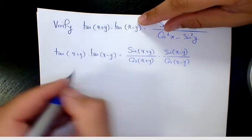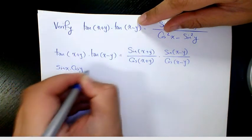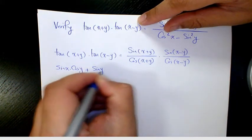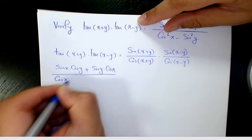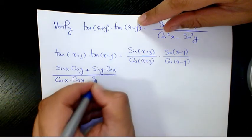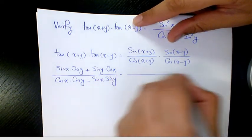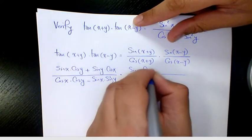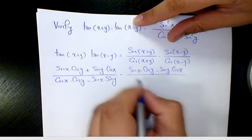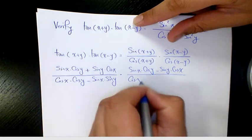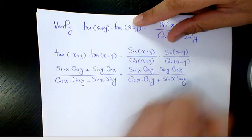Then you expand it. You have sine(x)cosine(y) plus sine(y)cosine(x) over cosine(x)cosine(y) minus sine(x)sine(y), times sine(x)cosine(y) minus sine(y)cosine(x) over cosine(x)cosine(y) plus sine(x)sine(y).